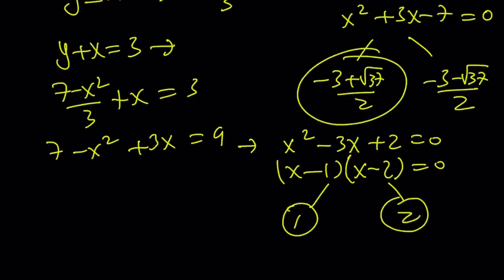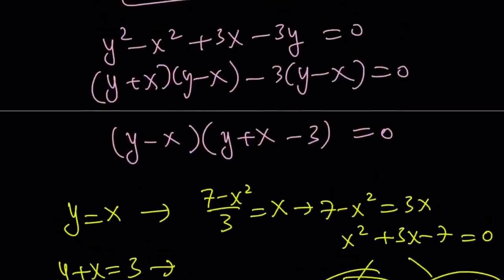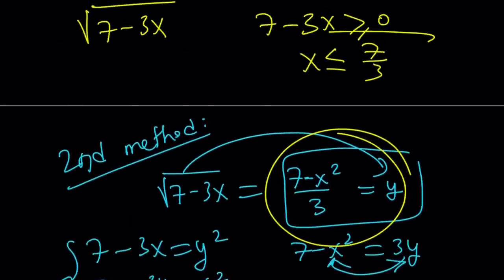So those are the candidates. But we have to check for extraneous solutions. Here's what I'd like to tell you. This is less than 0, negative. So something that is negative, do you think that is going to be less than or equal to 7 thirds? If something is negative, obviously that is going to be less than or equal to 7 thirds for sure.